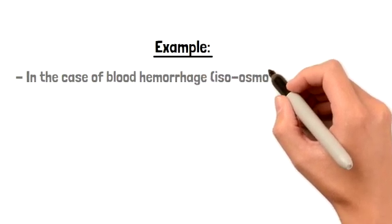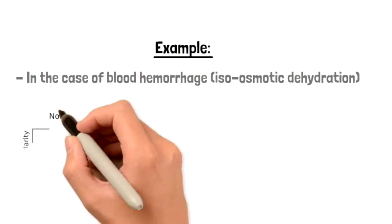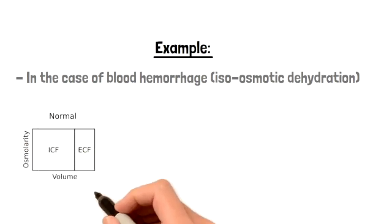Let's take the example of someone bleeding out, a blood hemorrhage. Now this is iso-osmotic dehydration. This is our normal ECF.